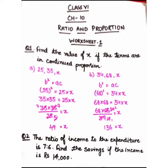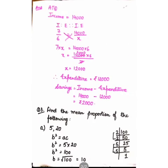In this way, we are going to solve the questions of continued proportion. Let's start with question number 2. The ratio of income to expenditure is 7:6. Find the savings if the income is Rs. 14,000. Here, income is equal to 14,000.